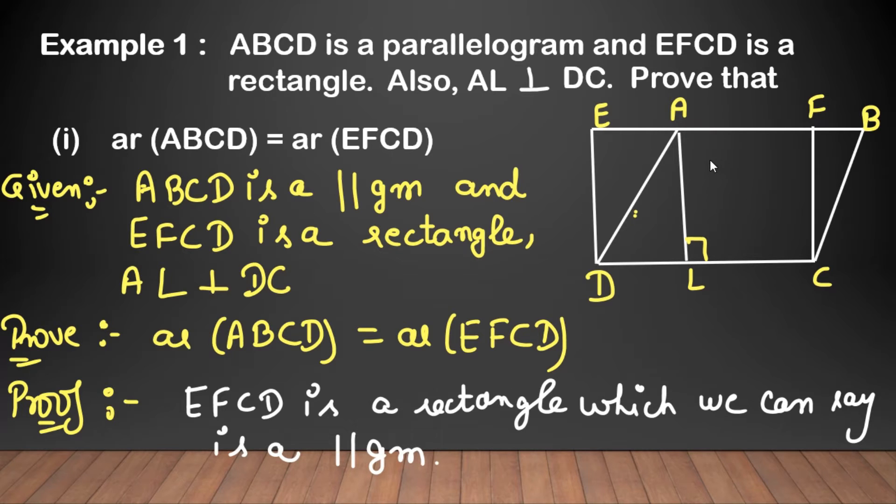So yeh do parallelograms honge. Ab hume kya yaad karna hai - Theorem 9.1. Usmein kya given tha? If two figures have same base and parallels in between, and the figure hai between two parallels, to unke areas dono figures ki equal hongi. So, jo humari EFCD figure hai, ismein humara CD base hai. ABCD me bhi base CD hai. Dusari hume parallels dekhne hai - ismein parallel kya hai CD, EB. In CD, EB ke beech me hi dono figure lie kar rahe hain.